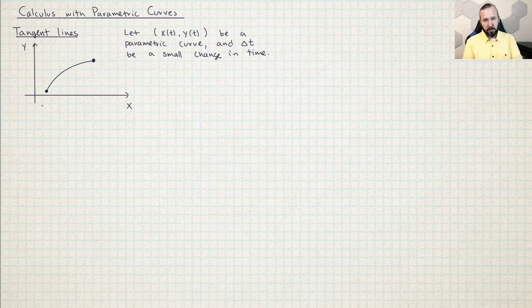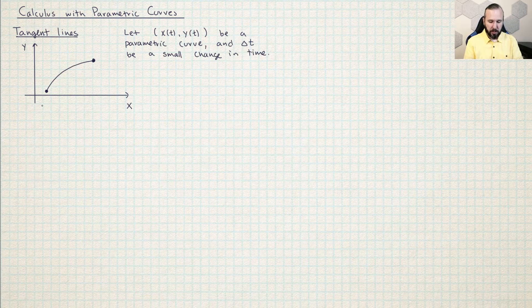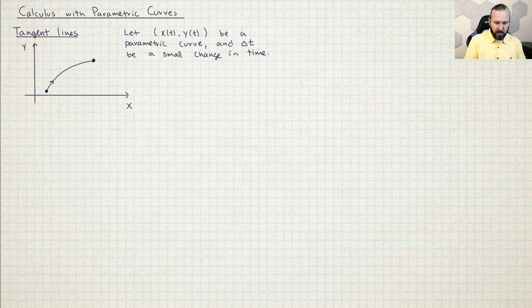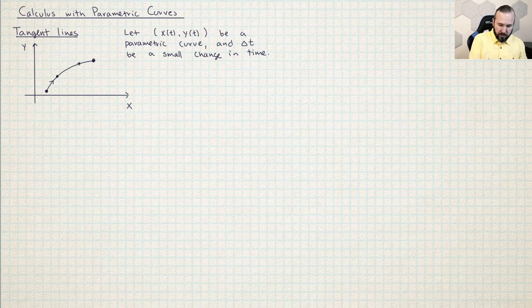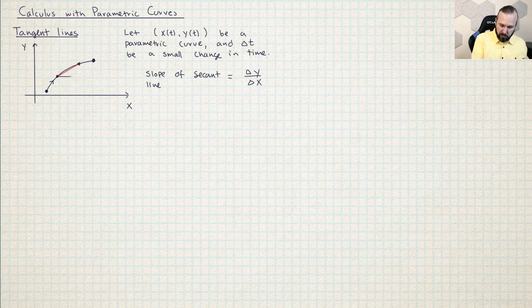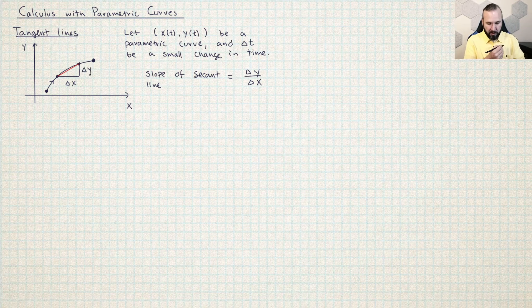The first step in doing calculus with parametric equations is learning how to write the equation of the tangent line. I have a parametrically defined curve set up here in xy space, and I'm going to consider some small step forwards in time delta t. As t increases, I'm imagining the particle moving in this direction. I can consider two times t₁ and t₂, and that gives me a secant line connecting those two points. The slope of the secant line is delta y over delta x — this amount is delta x, this amount is delta y, and that ratio is the slope of that red secant line.